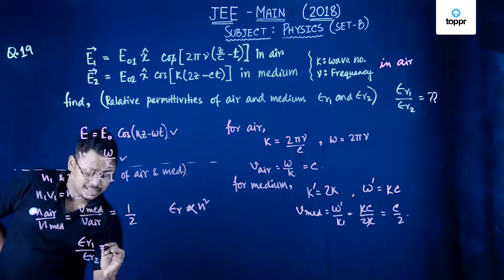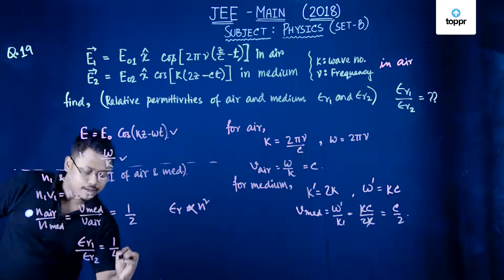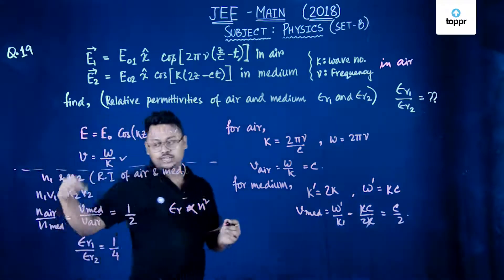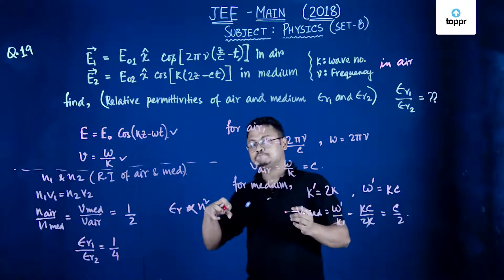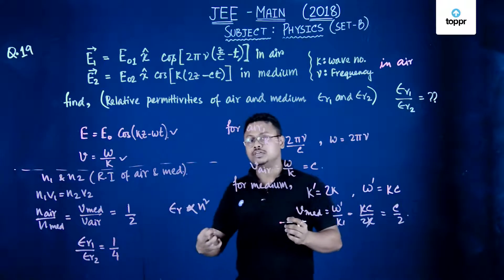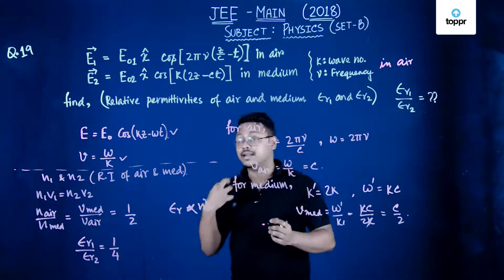So this will be equal, this will be equal to 1 by 4. So the ratio of the refractive index is square root of the ratio of their corresponding relative permittivity.